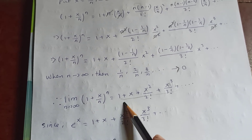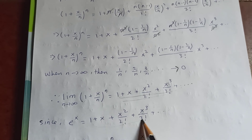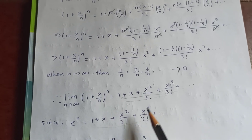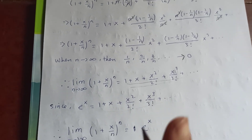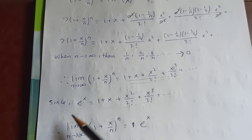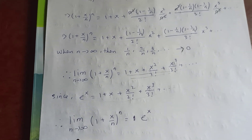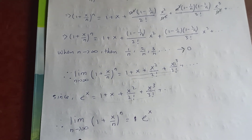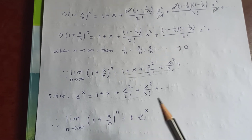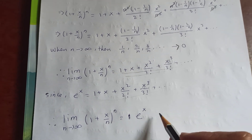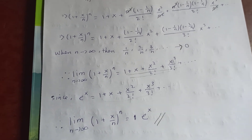This series is exactly the exponential series, since e^x equals 1 + x + x²/2! + x³/3! and so on. If you look at this series and the exponential series, they are exactly the same, meaning the left-hand side must be equal. Therefore, the limit as n tends to infinity of (1 + x/n)^n equals e^x. This is the proof for this limit.